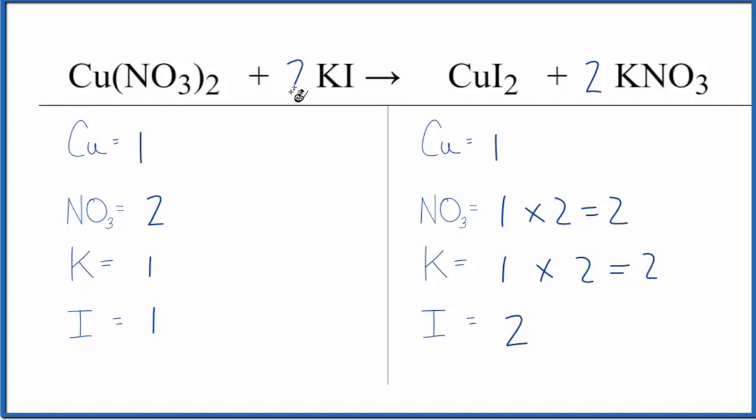Let's just put a two in front of the KI. Now we have one times two. That gives us two potassiums. Those are balanced. And then one iodine atom times two. And those are balanced.